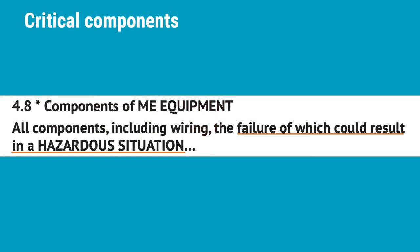While there is no formal definition of critical components, the text of IEC 60601-1 provides an informal definition, which is all components, including wiring, the failure of which could result in a hazardous situation. So you shall apply your risk management process to identify which components are critical components.